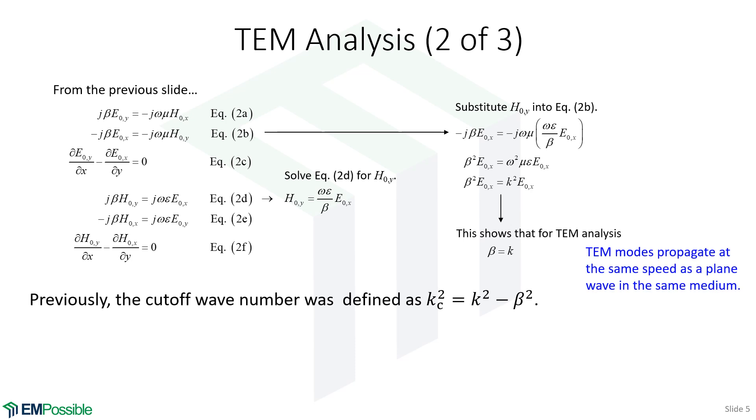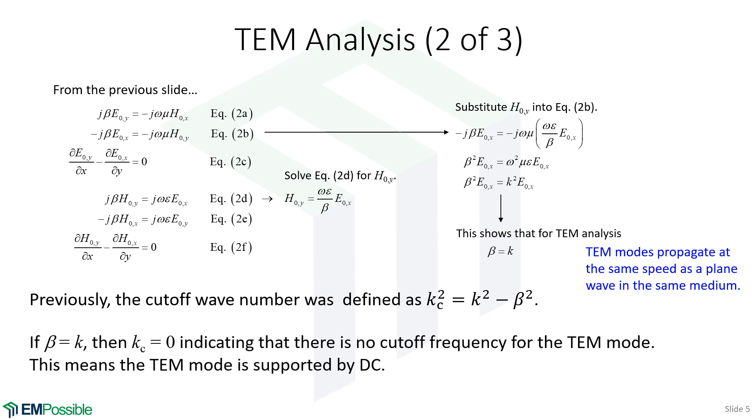We talked briefly about this cutoff wave number. I know we didn't mention that a whole lot yet, and we'll talk about this more in following lectures. But that was K squared minus beta squared. Well, if these two terms are equal, this cutoff wave number is zero. And what we will conclude from this is the TEM modes have no cutoff frequency. So we will have a TEM mode all the way down to DC.